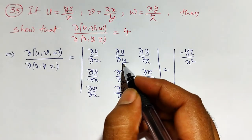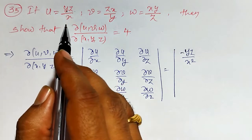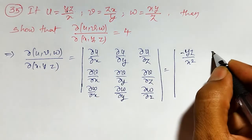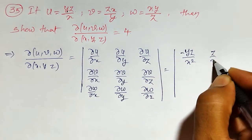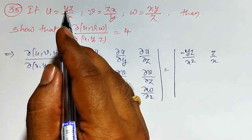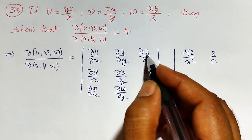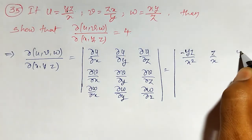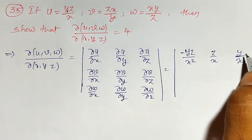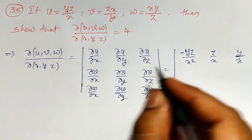For ∂u/∂y, while finding the partial derivative of u with respect to y, z and x are constant. The partial derivative of y is 1, so ∂u/∂y = z/x. Similarly for ∂u/∂z, y/x is constant and the partial derivative of z is 1, so ∂u/∂z = y/x. This completes the first row.